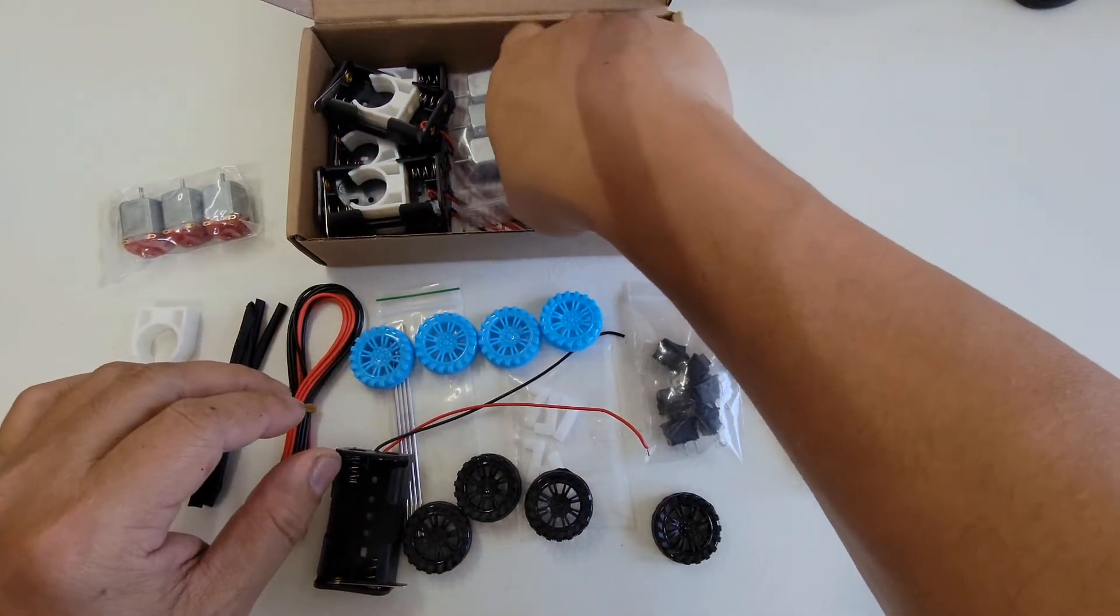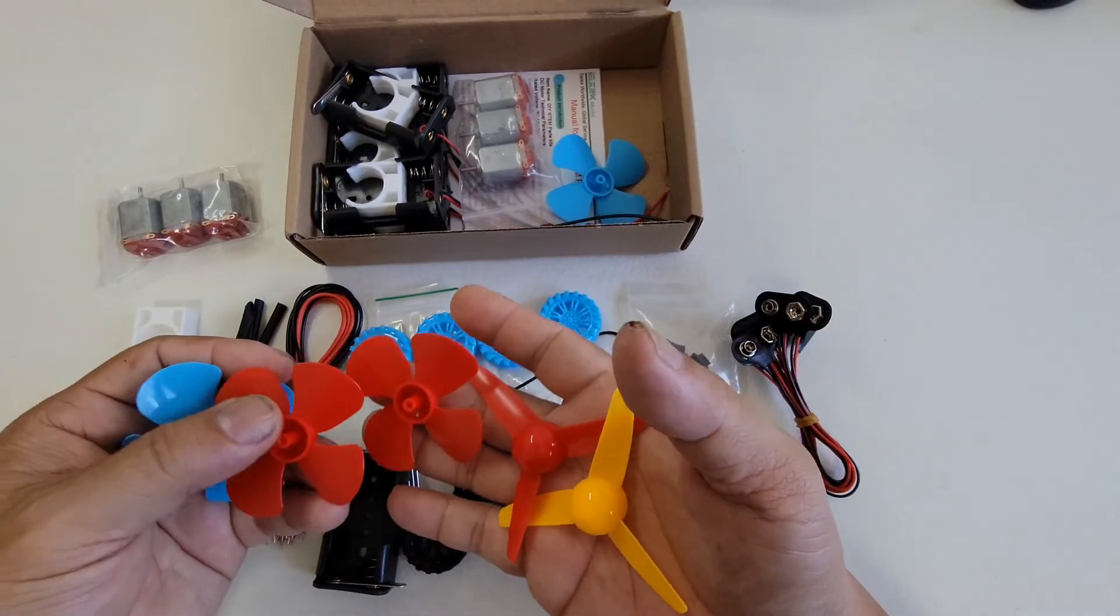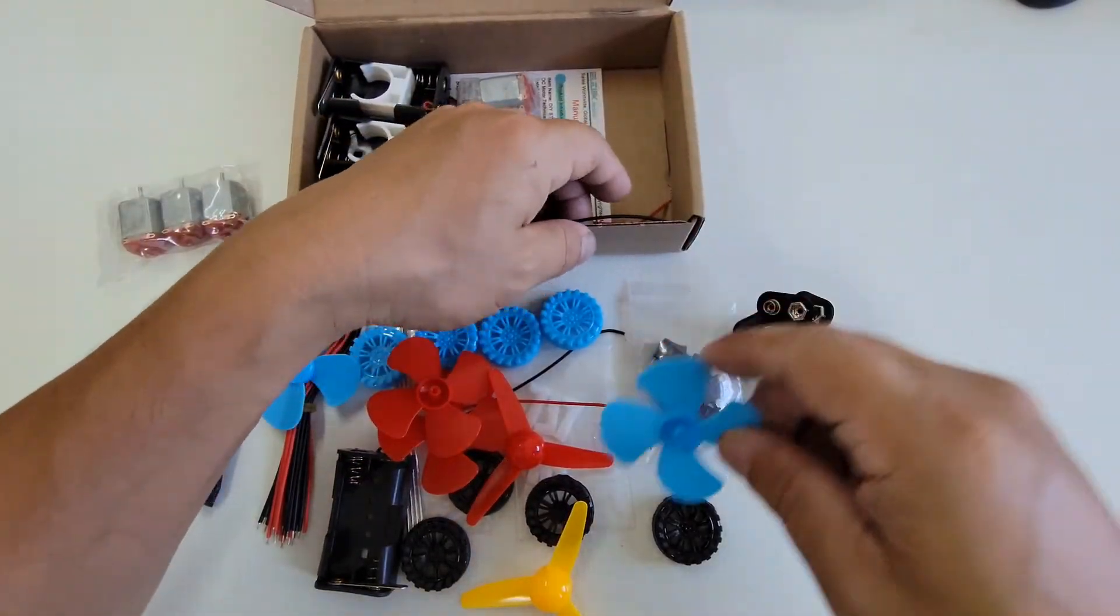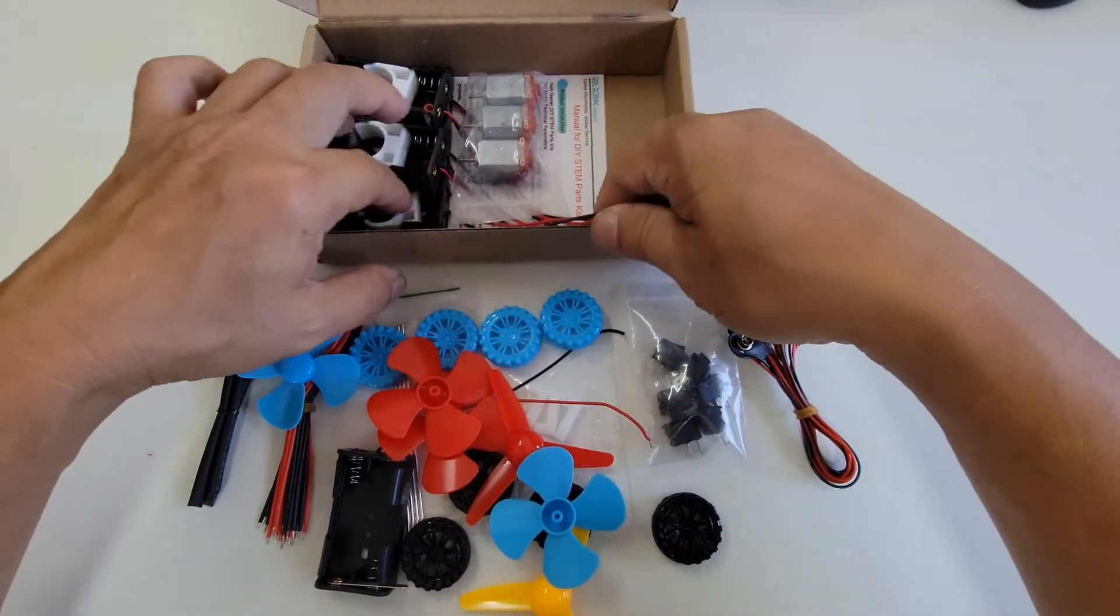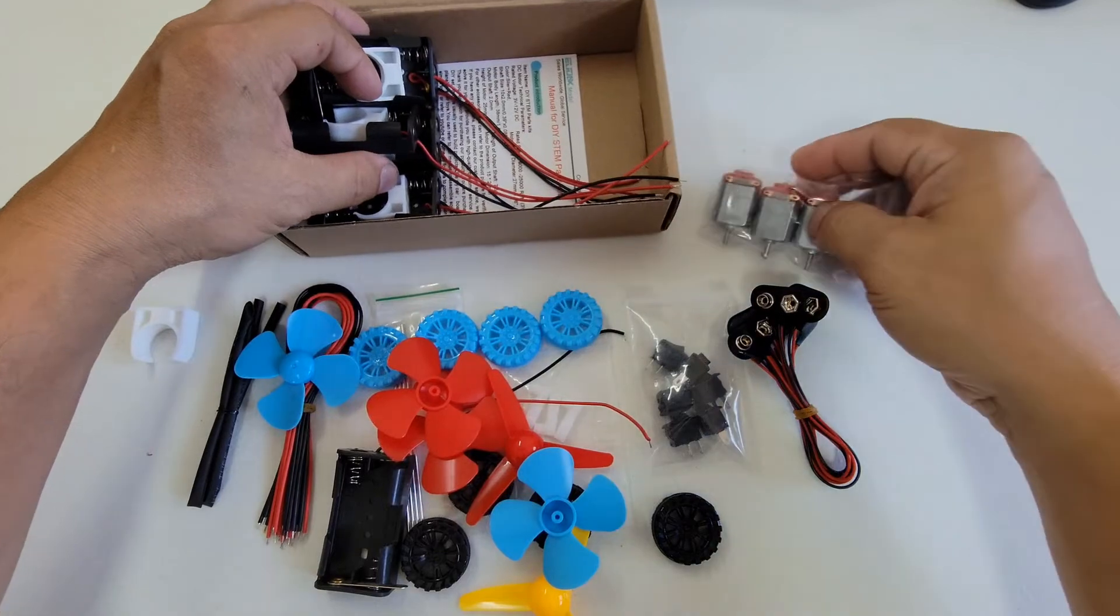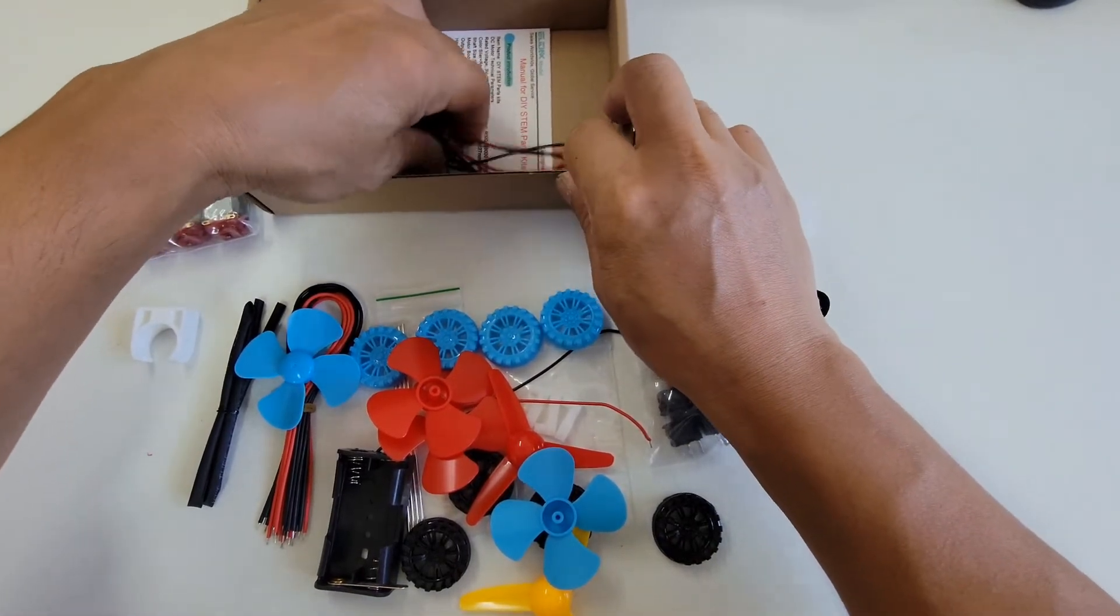And we have a couple of different propellers right here. A bunch of them right here. And a bunch of more wires. Oh, actually, it's part of the battery holder.